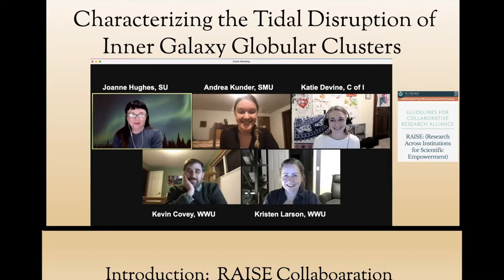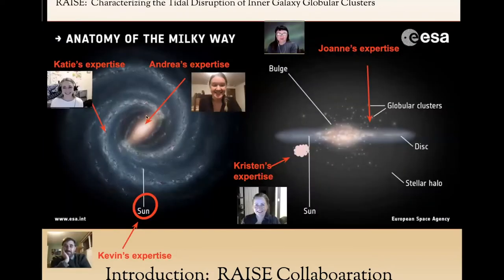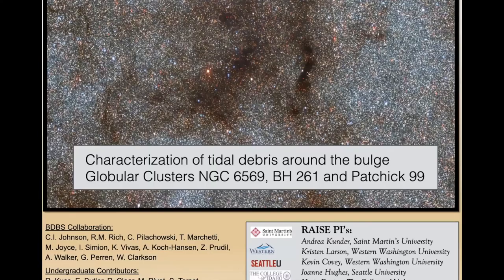We all use stellar populations to piece together the formation and evolution of the Milky Way galaxy, but with slightly different angles. My interest lies in the inner galaxy and especially the old stars there. Katie's expertise is in the galactic plane and interstellar medium, Kevin's on local clusters and stellar populations near the sun, Kristen works on extinction and interstellar dust, and Joanne's science involves observational imaging of stars in globular clusters and dwarf galaxies. We are working together to probe what proportion of the stellar population of the bulge is composed of stripped globular cluster stars. We're thankful for the Kickstarter grant, which has given us resources to explore bulge globular clusters NGC 6569, BH261, and Patchic 99.